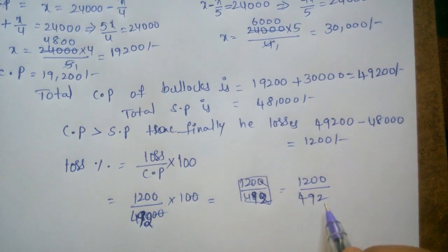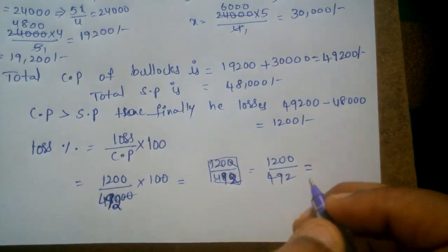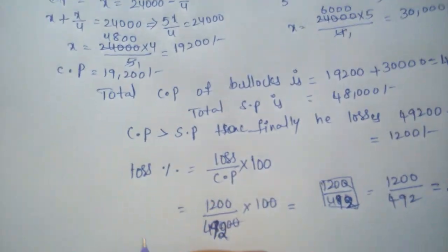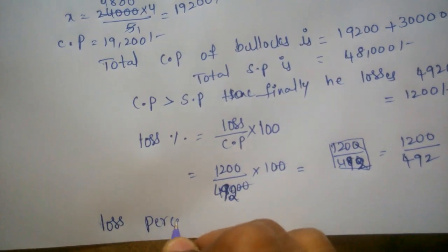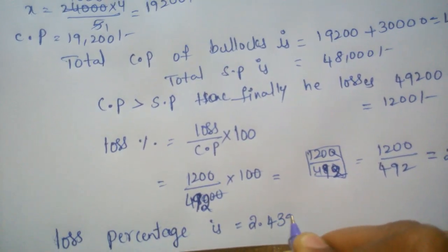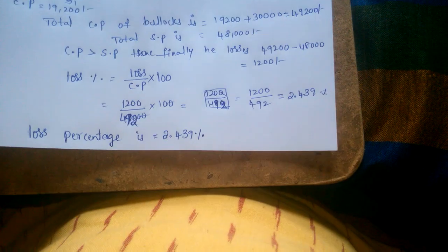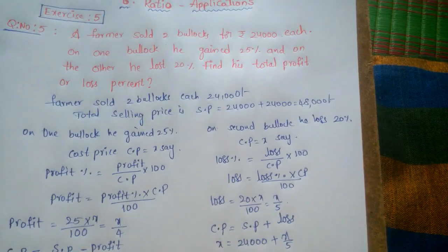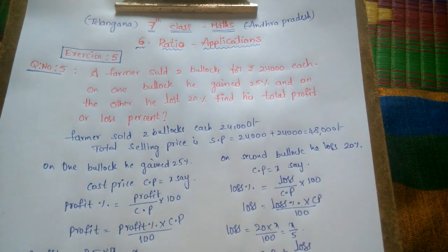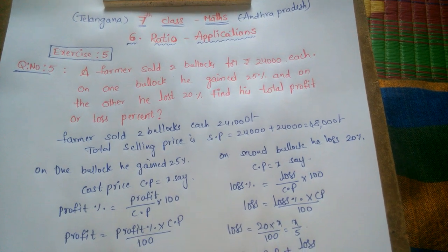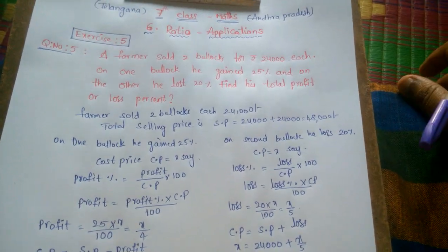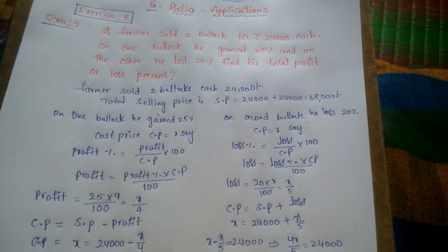So loss percent equals 1,200 divided by 49,200 times 100, which equals approximately 2.439%. This is the answer. I hope you liked this video. If you did, please hit the like button and share with your friends and subscribe to my channel. You can ask me more questions and I can solve them for you. Thanks for watching, friends.